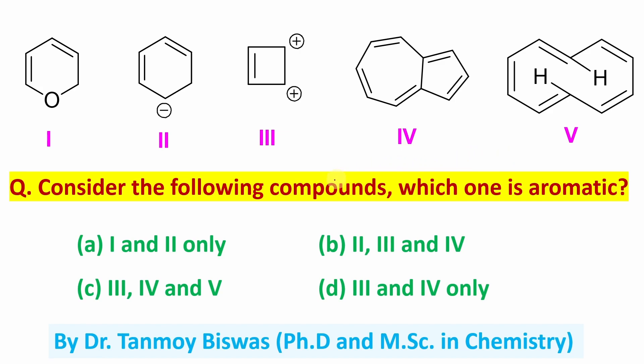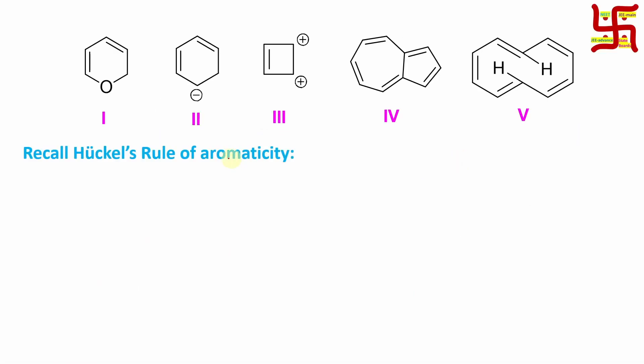So consider the following, which one is aromatic. In order to decide which one is aromatic or not, we need to take the help of the Hückel rule for aromaticity. What are the rules? Compound must be cyclic. Second rule, compound must be planar. Rule number three is it is actually conjugated and every atom must have at least one p orbital. And they are obviously conjugated.